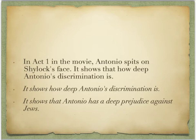In Act 1 in the movie, Antonio spits on Shylock's face. It shows that how deep Antonio's discrimination is. There's some good stuff about this particular couple of sentences. First of all, it's in the present tense, which is good when we're talking about literature, in this case drama. The reference to the movie is then explained — Antonio spits on Shylock's face — and the student also mentions what that means: that it shows that Antonio has deep discrimination.